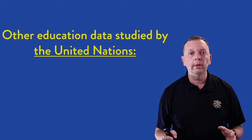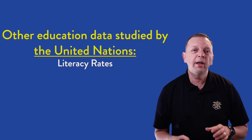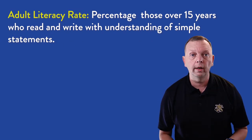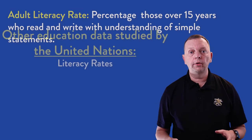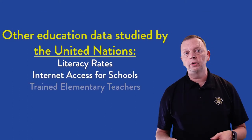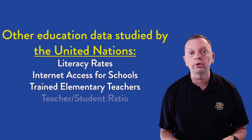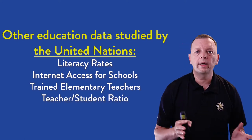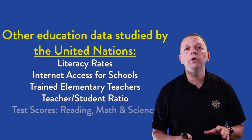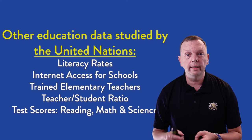Among the other factors the UN tracks to account for education are literacy rates — the percentage of citizens who can actually read and write. The UN also looks at the percentage of schools that have internet access, the percentage of elementary school teachers who are trained to be teachers, the ratio of teachers to elementary school children, and compares achievement scores in math, reading, and science.